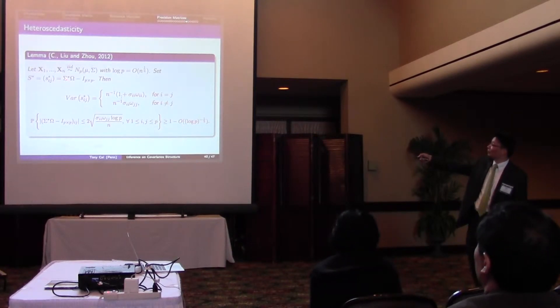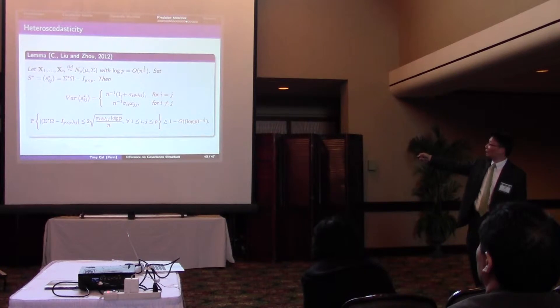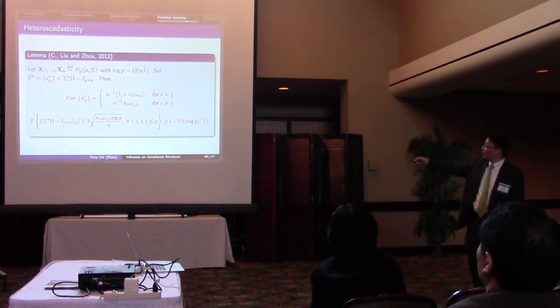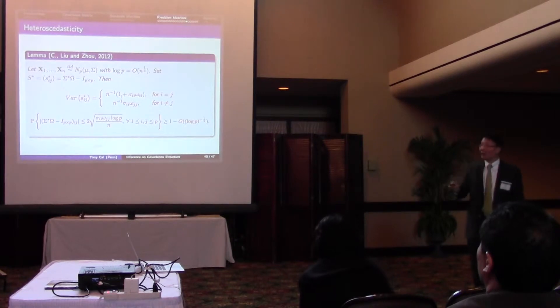S star. S star is simply what's in the constraint. Originally, we take the upper bound to be lambda. But now let's look at the elements in this matrix more carefully by computing its variance.